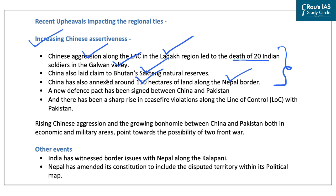China has signed a new defense pact with Pakistan, and there has been a sharp rise in ceasefire violations along the Line of Control. Because of increasing collaboration between China and Pakistan, India is facing the possibility of a two-front war — both on the Chinese border and the Pakistani border. This places a critical challenge for India regarding its security.